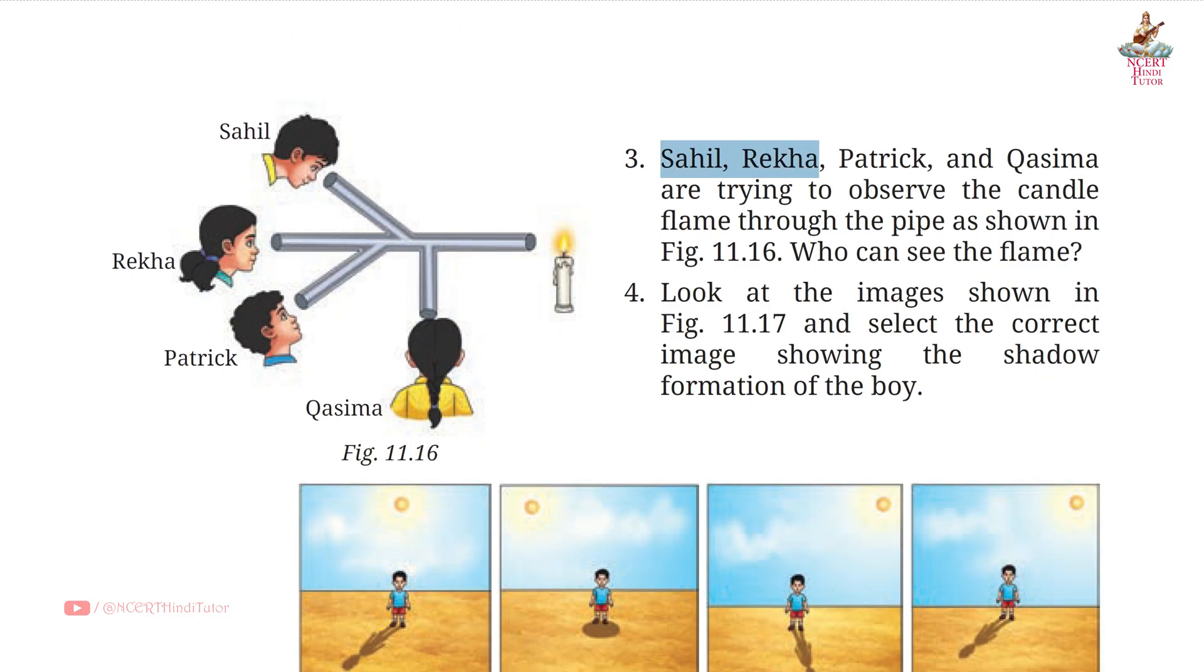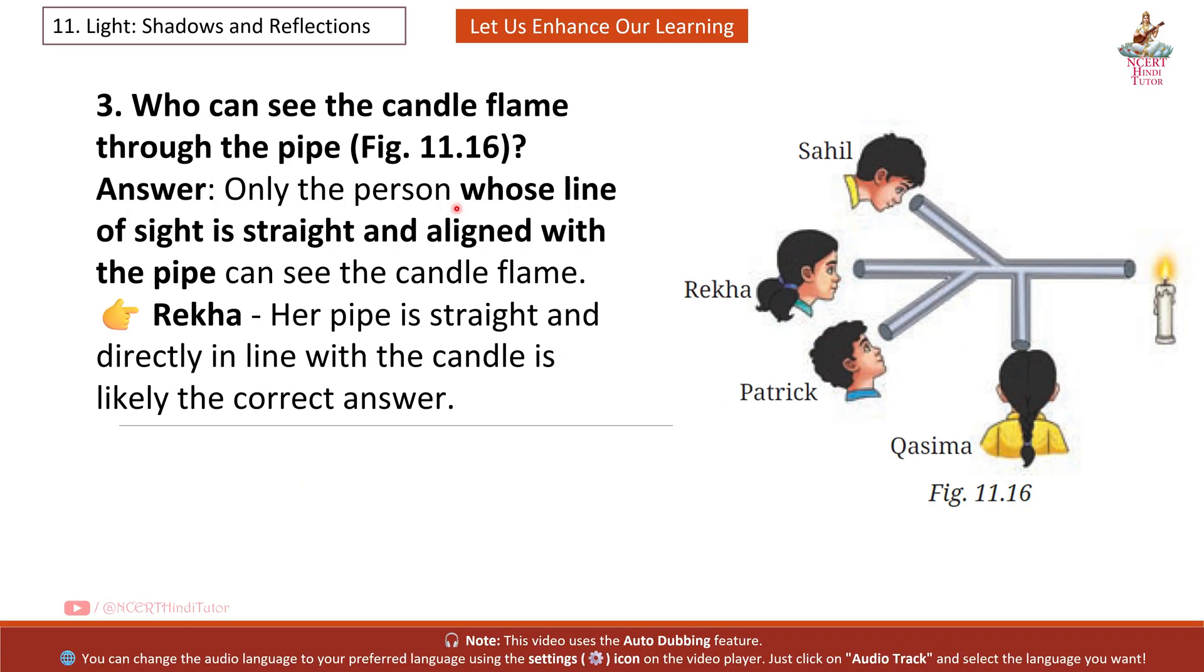Question 3: Sahil, Rekha, Patrick and Qasima are trying to observe the candle flame through the pipe as shown in figure 11.16. Who can see the flame? Answer: Only the person whose line of sight is straight and aligned with the pipe can see the candle flame. Rekha, her pipe is straight and directly in line with the candle is likely the correct answer. Rekha can see the candle flame through the pipe because the line of sight is straight.